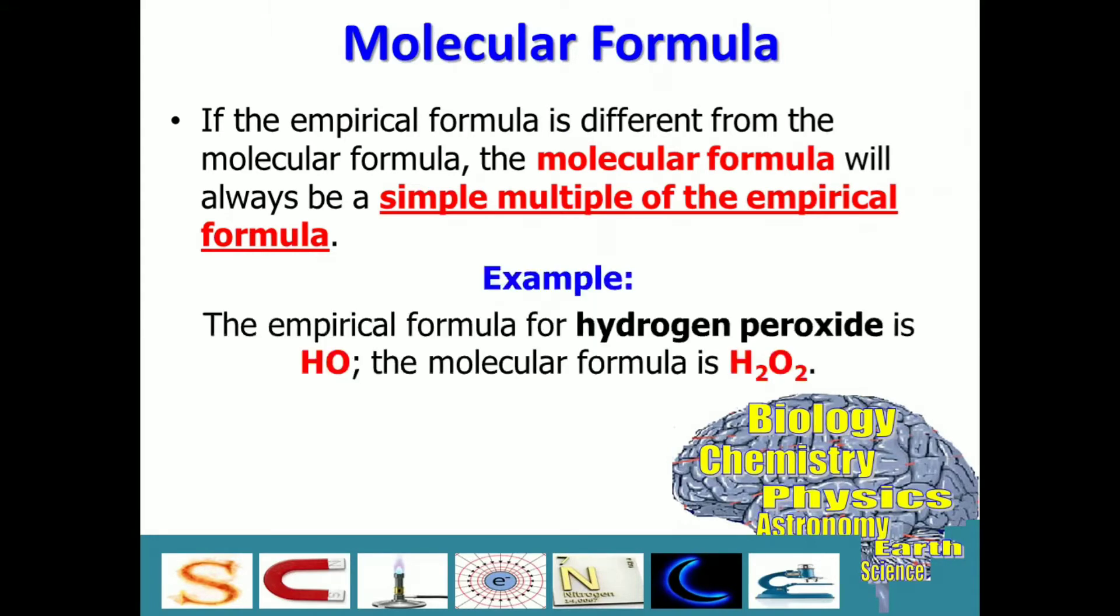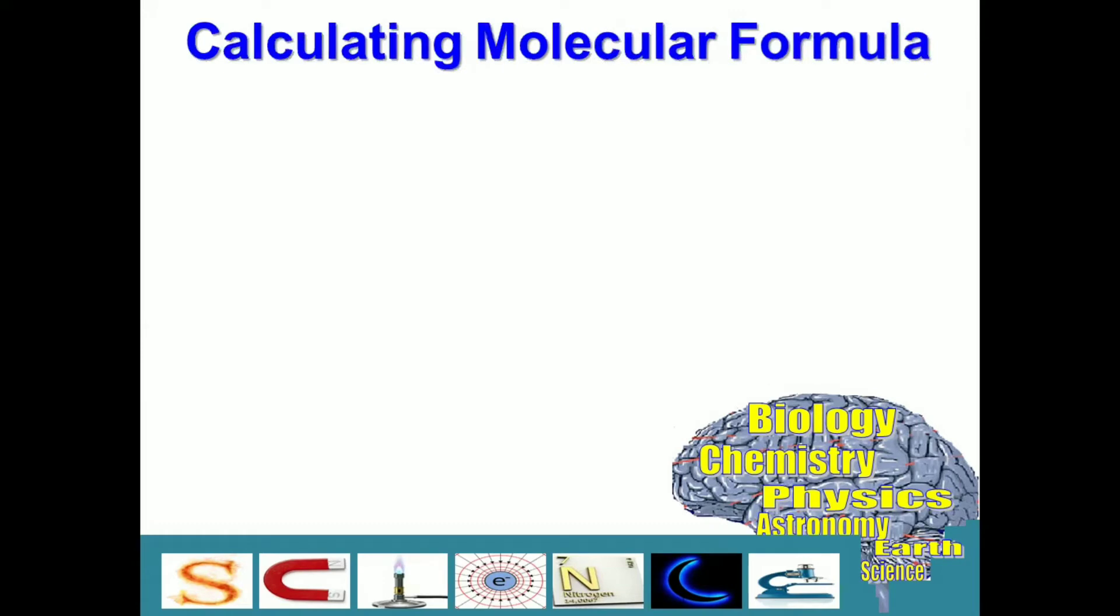For example, the empirical formula for hydrogen peroxide is HO while its molecular formula is H2O2. If you can see in both instances, the ratio of hydrogen and oxygen is 1 is to 1.